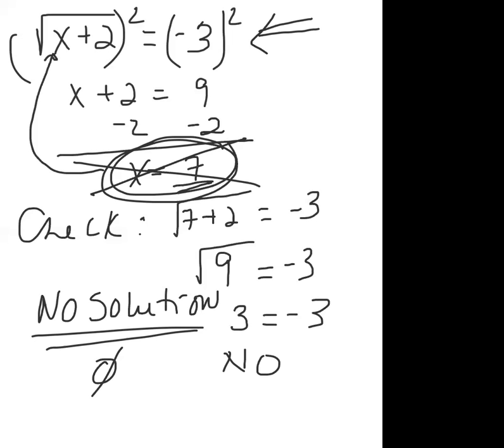On the assignment, problems one through seven are review questions. Number eight and nine are vocabulary questions. The problems for solving radical equations really start at number ten. If you're still having issues with numbers one through seven, send me an email, text, or a message on Microsoft Teams.